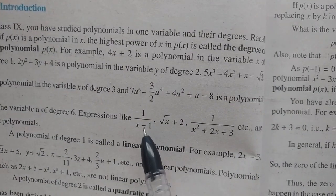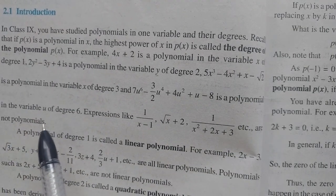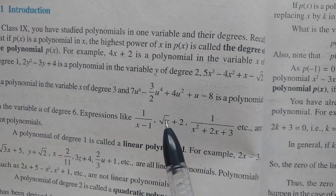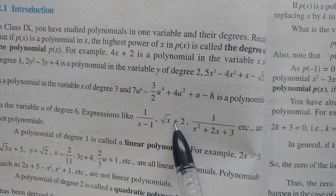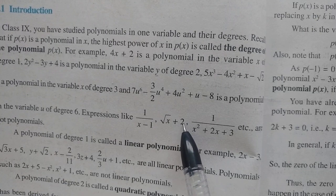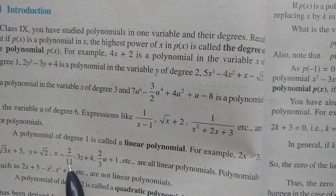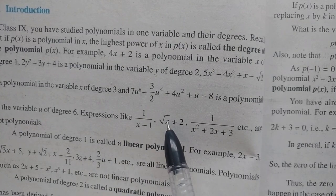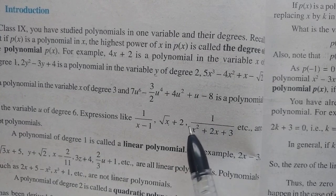Expressions like these are not polynomials. The meaning is: if x is in the denominator, the expression is not a polynomial. And if x is under a root sign, that expression is also not a polynomial. Note that root 2 alone — a constant without a variable — is acceptable, but x under a root is not a polynomial.